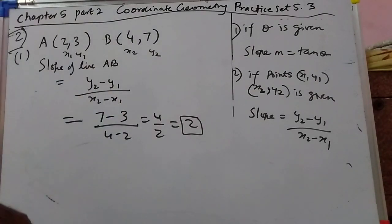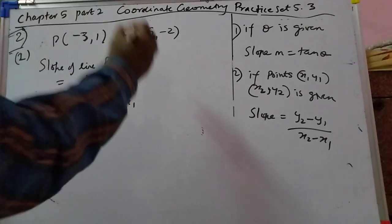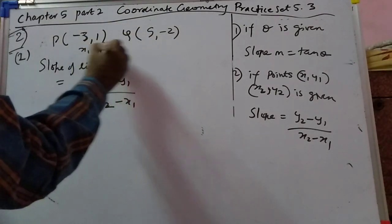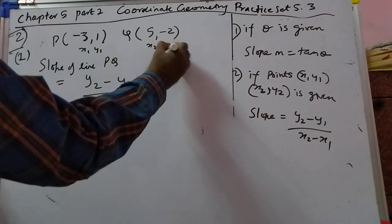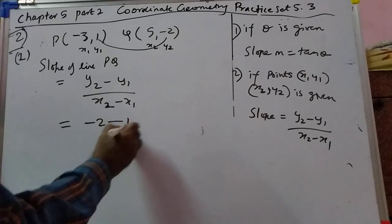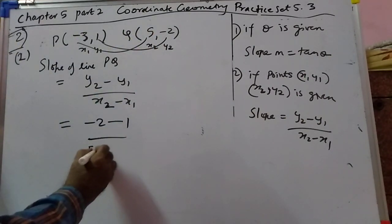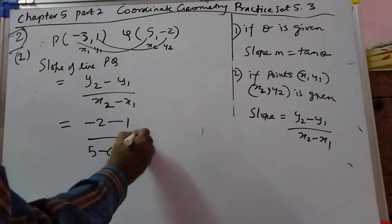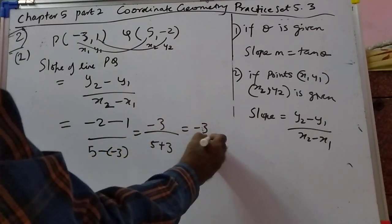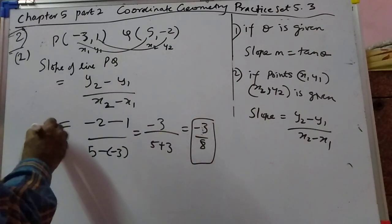Next we will do the second problem. Take the points as (x1, y1) and (x2, y2). This minus this: minus 2 minus 1, over this minus this: 5 minus 1 minus 3. That will become minus 3 upon 5 plus 3, so minus 3 upon 2. That is the slope.